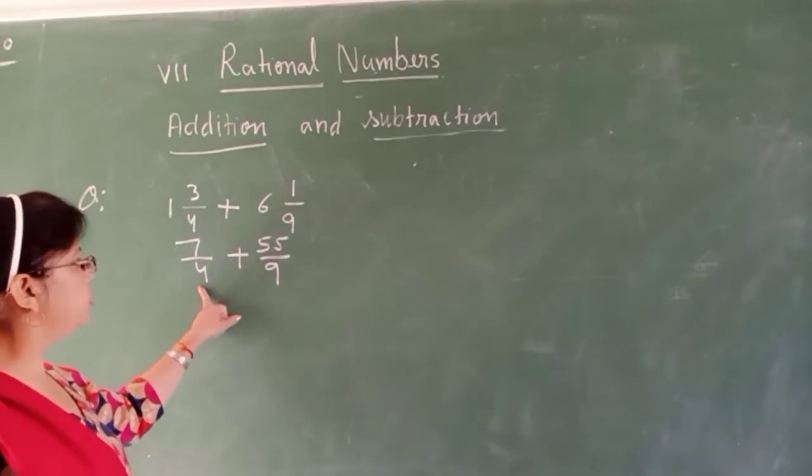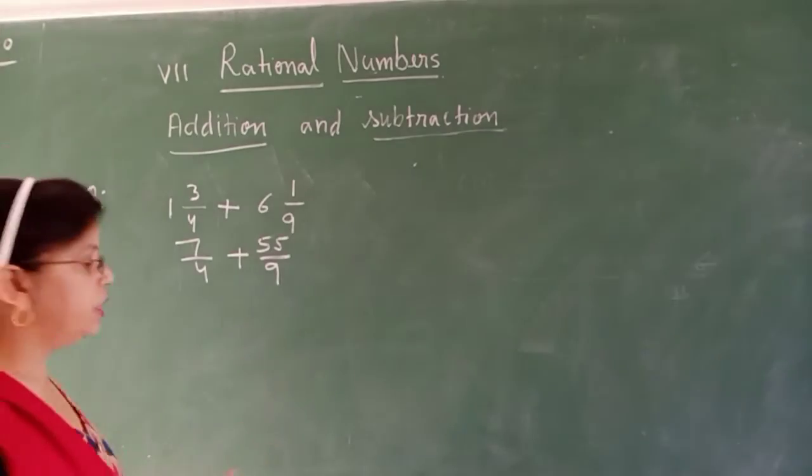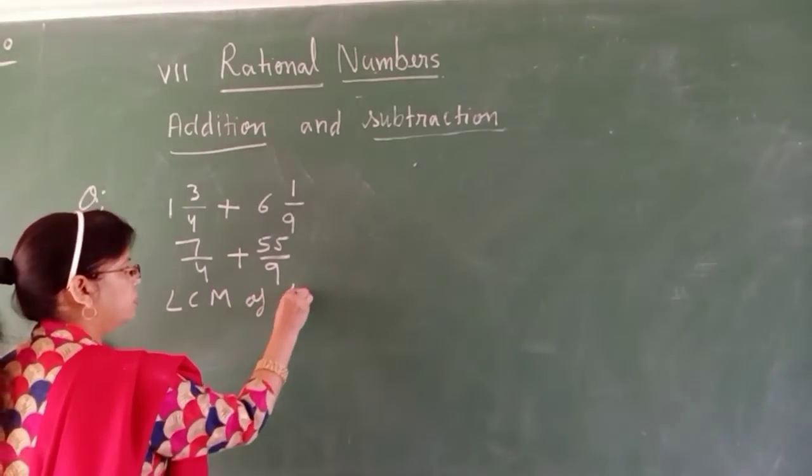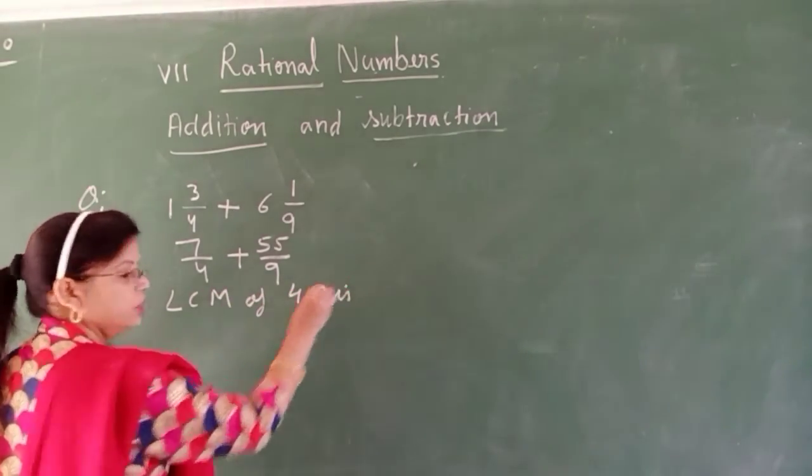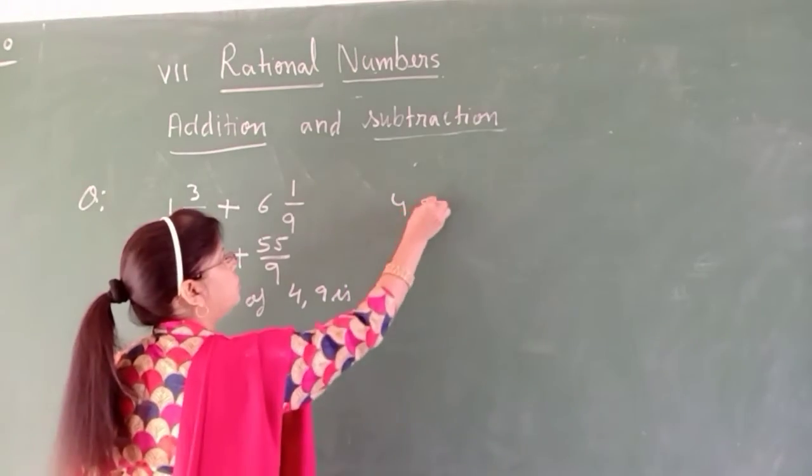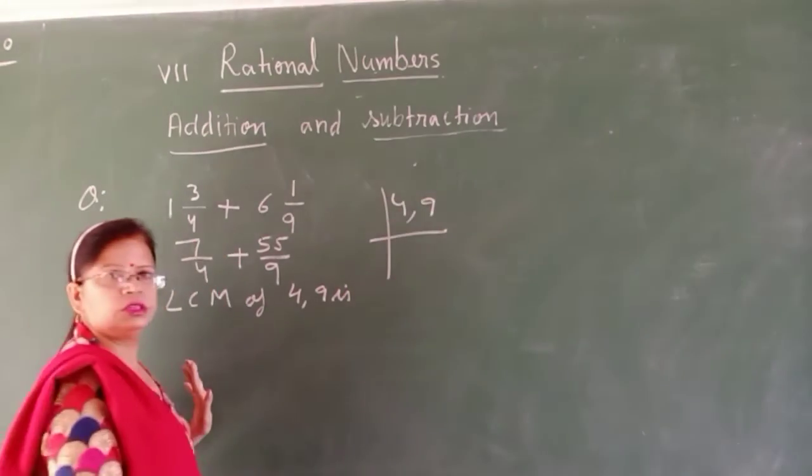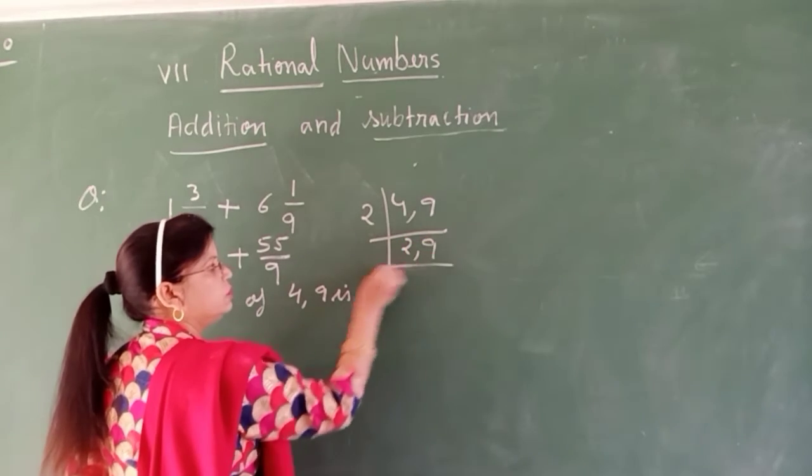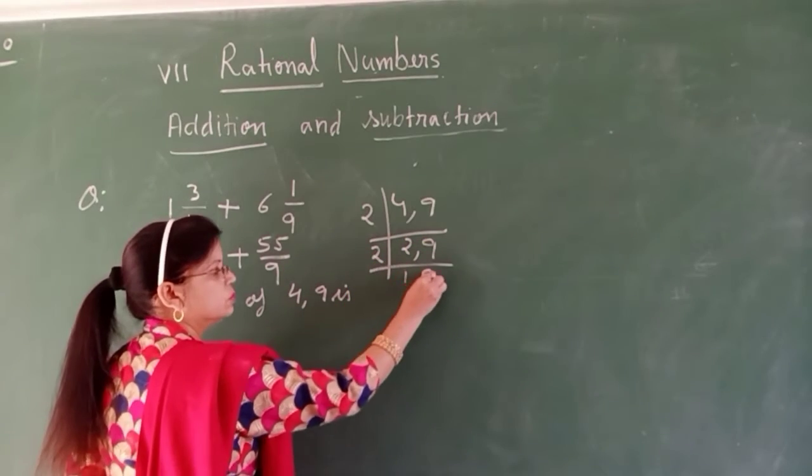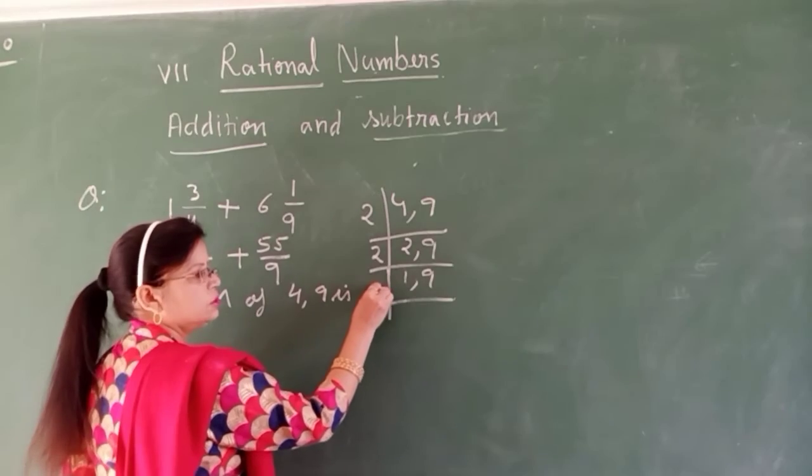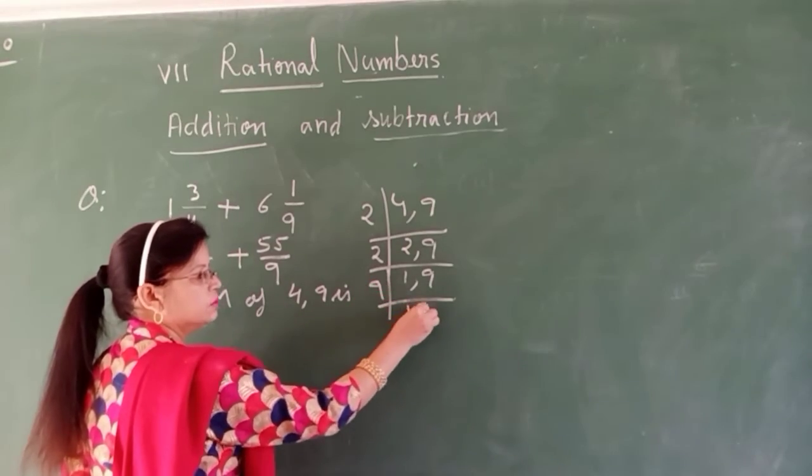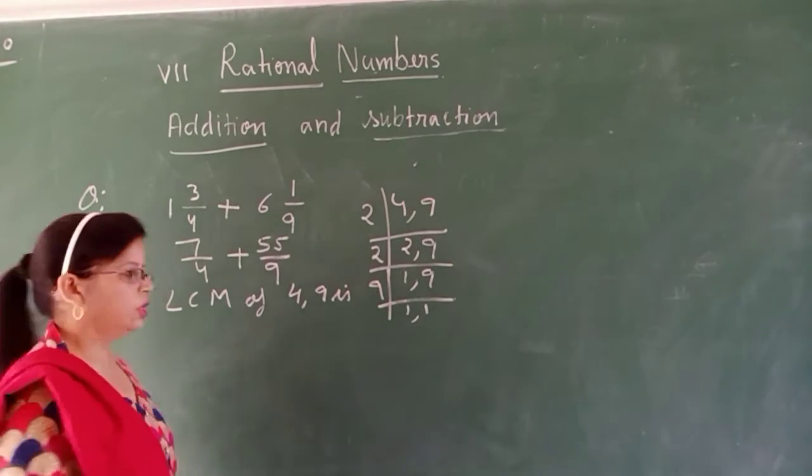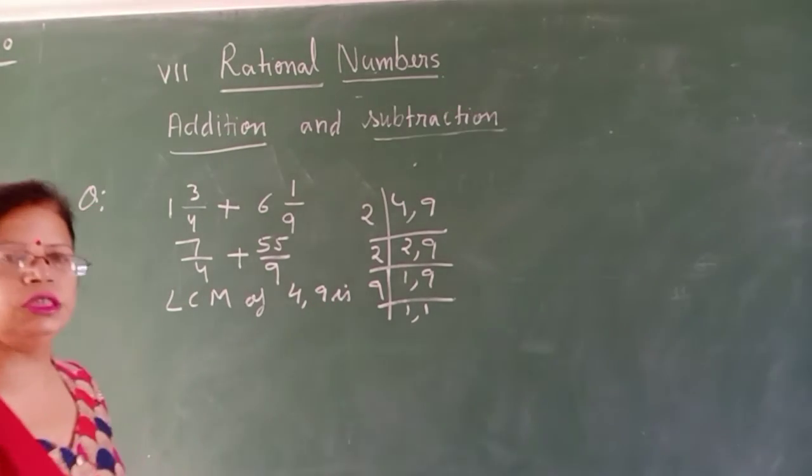How will we do this? LCM of 4 and 9. Let's check the LCM in rough. We will do the LCM process. 2, then again 2. Then you may write directly 9. 2 times 2 is 4, times 9 is 36. So LCM of 4 and 9 is 36.